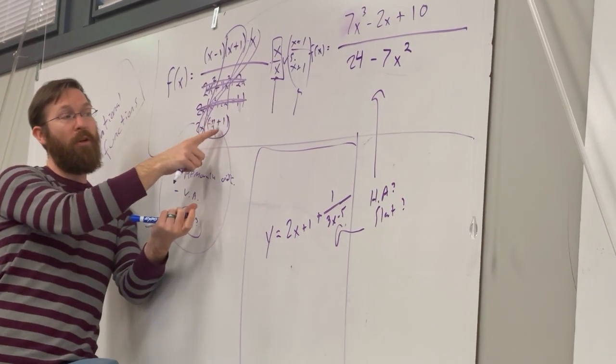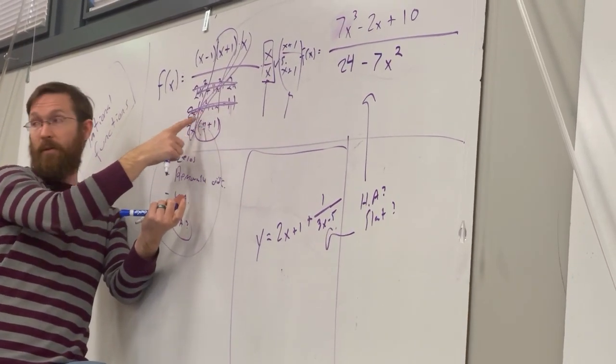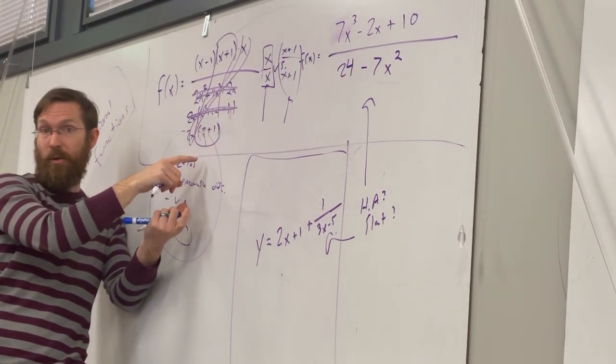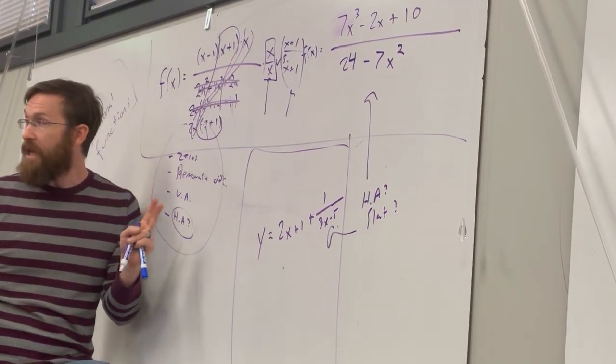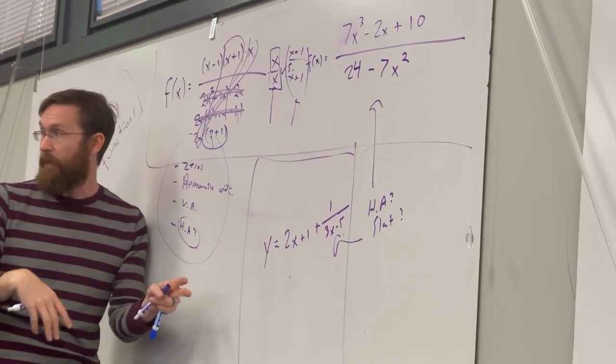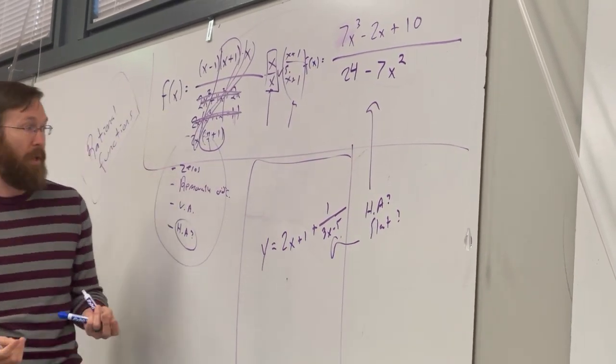you'd see that you're getting smaller and smaller values in the denominator approaching 0, which is producing larger and larger y values. So you know that was fairly brief. We went through it at greater length before the break, but hopefully you can recreate that for yourself if you need to.